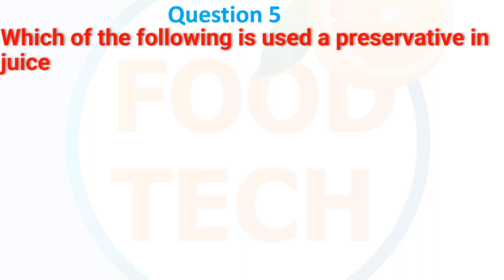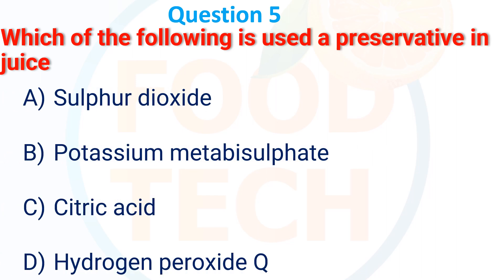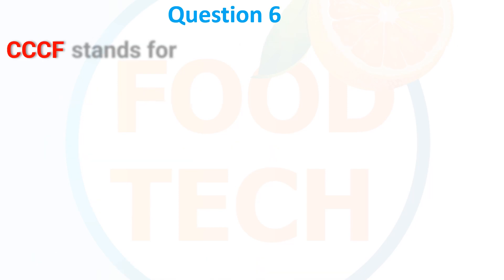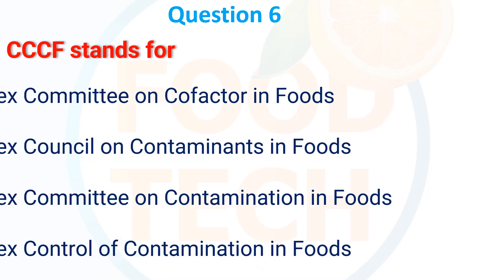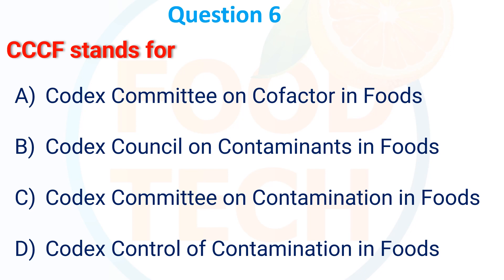Which of the following is used as a preservative in juice? A. Sulfur dioxide, B. Potassium metabisulphate, C. Citric acid, D. Hydrogen peroxide. The answer is B. Potassium metabisulphate.